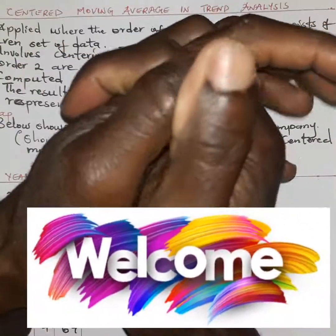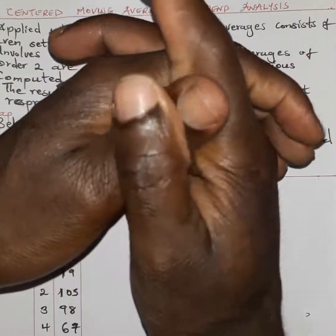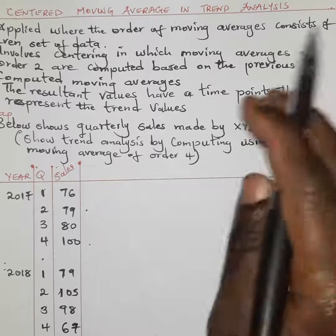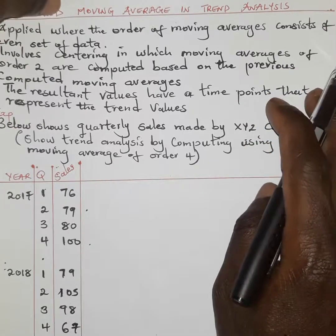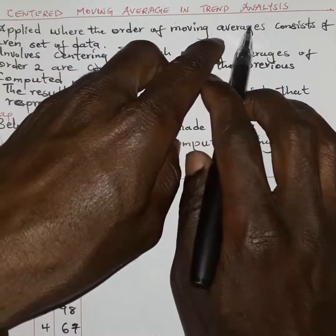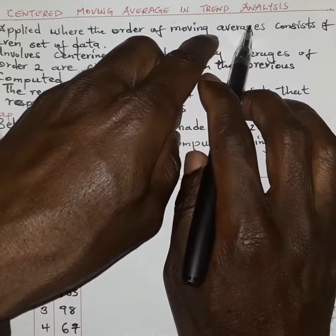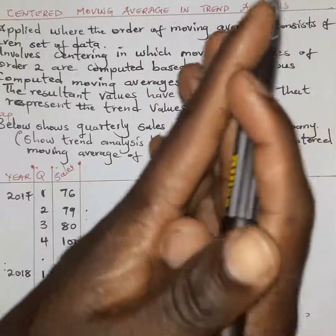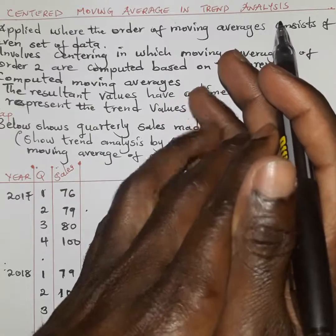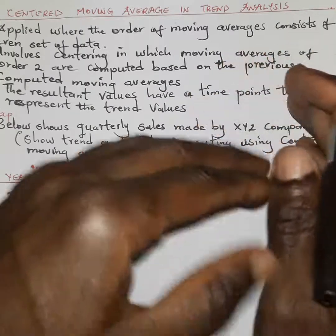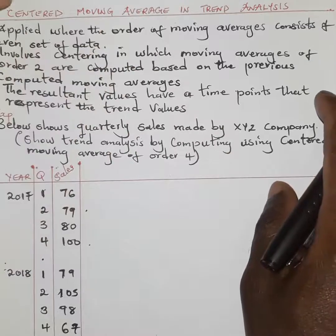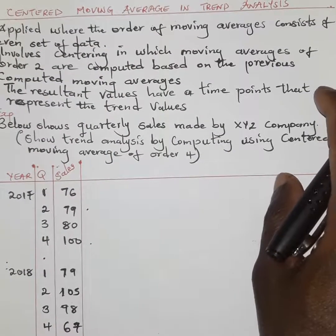Welcome to our classroom for another beautiful session. Today's topic is time series, and specifically we are going to examine trend analysis. Trend analysis is used to examine the changes in movement of variables over a given period of time. One of the methods used to estimate how variables change with time is known as centered moving averages.